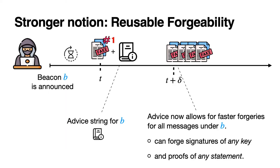One such property is the notion of reusable forgeability. Here, forging something with a beacon value produces an extra advice string, and this advice string can help speed up further forgeries under that beacon.